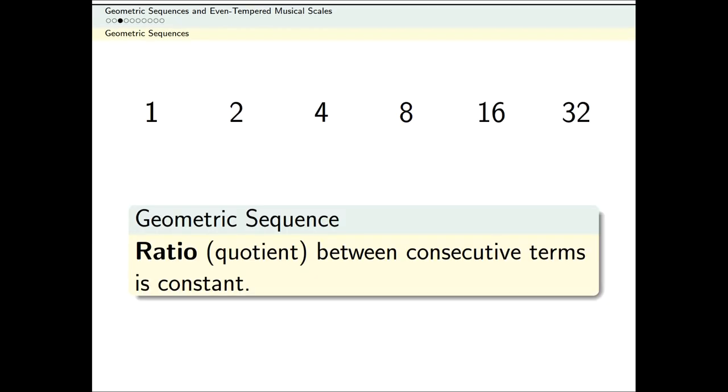This type of regularly increasing sequence is called a geometric sequence. In a geometric sequence, if I take any two numbers that are next to each other and divide, I get the same thing.